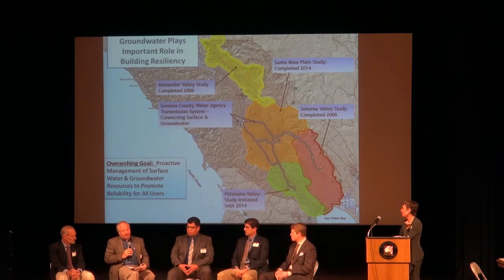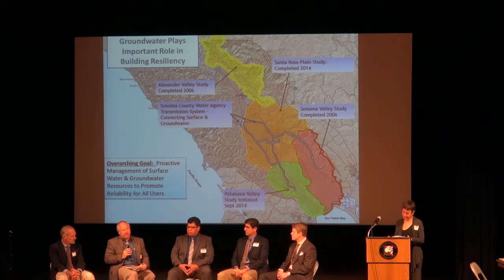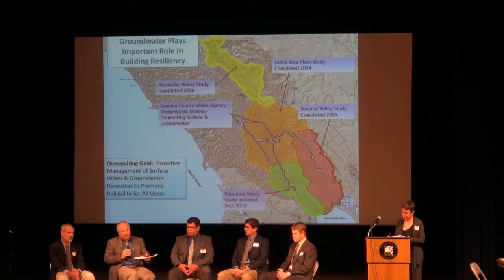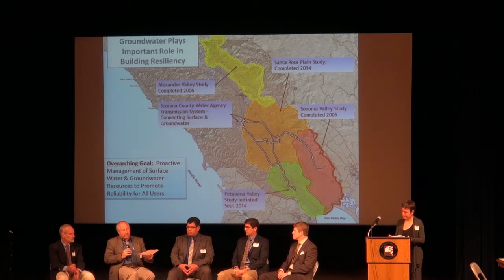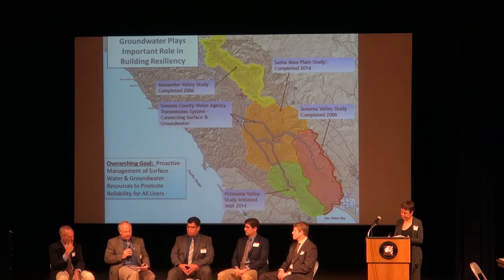Another example is riparian setback policy, which is hotly debated in our area — it dictates or manages land use in riparian corridors, including development of vineyards and well permitting and pumping. That's another area that is going to be reopened and is part of this groundwater legislation.